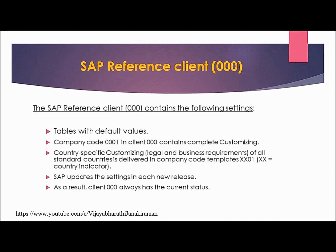SAP reference client 000 contains the following settings: all SAP tables with default values are delivered in client 000. Company code 0001 contains complete customizing and comes delivered in SAP reference client 000. Country-specific customizing — that is, legal and business requirements of all standard countries — is delivered in company code templates in client 000, where XX stands for the country indicator. SAP updates the settings in client 000 for each new release.